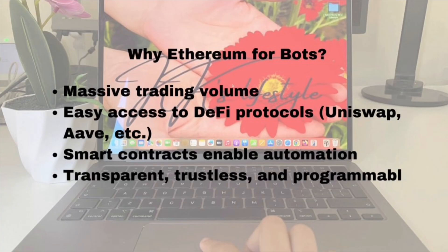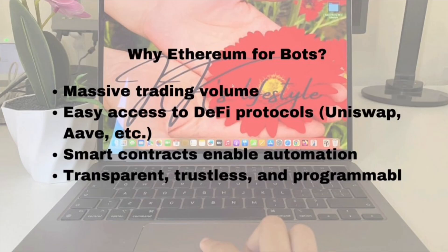Third, smart contracts make all of this possible. They allow bots to automate everything from trading to executing complex financial strategies based on specific coded rules. Once deployed, a smart contract can interact with other contracts and platforms automatically, without human intervention. And finally, because Ethereum is transparent and trustless, it's a much safer environment for automation. Every transaction is recorded on the blockchain, so you can audit everything your bot is doing in real-time. Your bot can interact directly with protocols and execute trades according to your strategy, whether you're building a simple trading system or a more advanced DeFi bot.